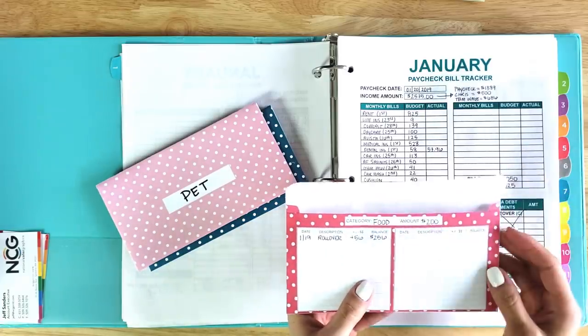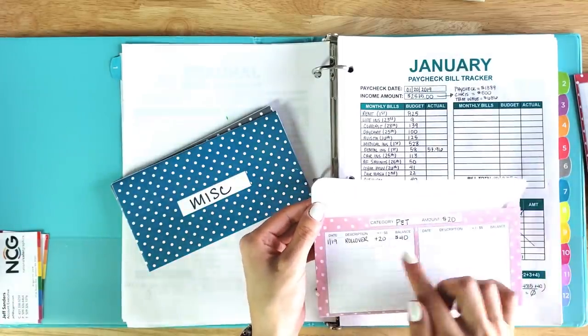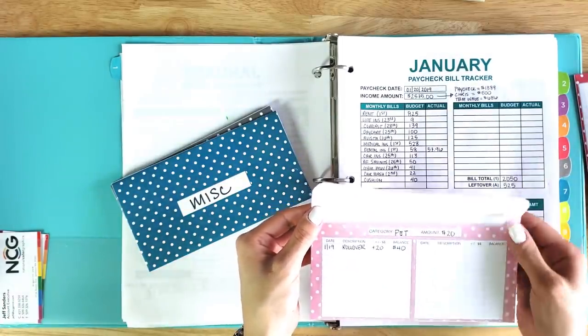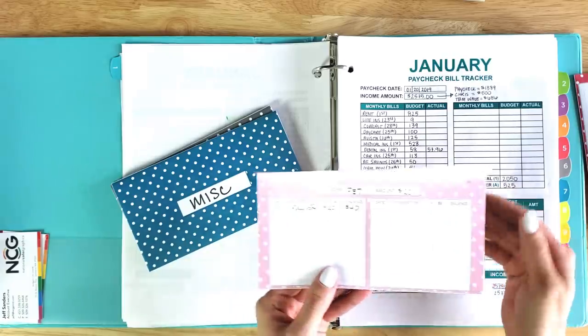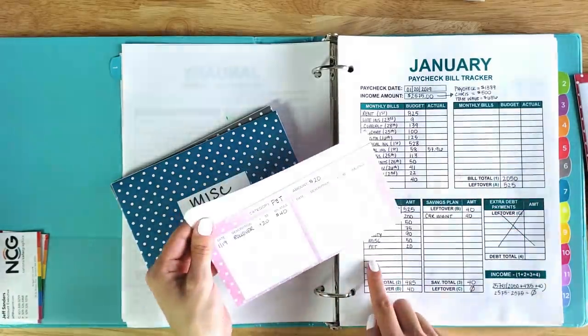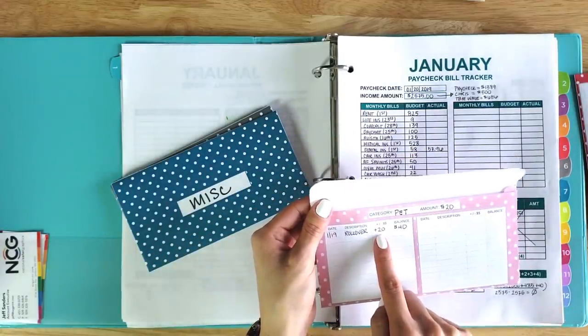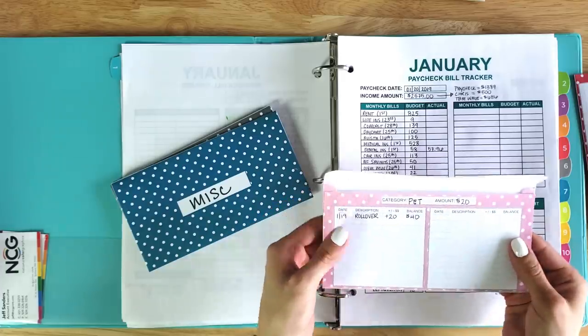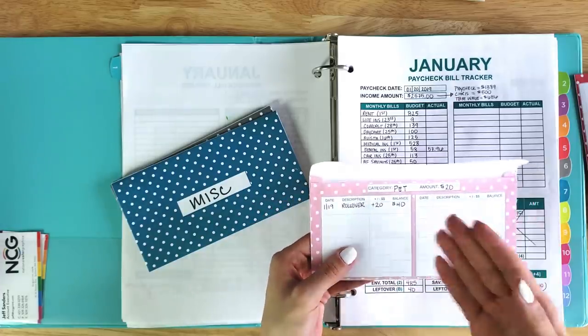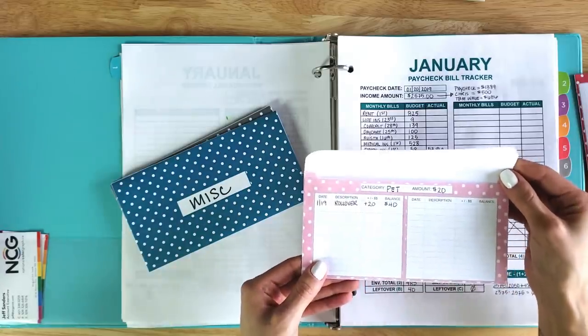For food, I now have $256. My pet envelope, I rolled over $20, which gives me $40. How this works is, I have a budget amount of $20. But, I have to include the rollover amount that I used for my last paycheck envelopes to give me this new balance. I like to keep an updated balance of what's inside my cash envelopes at all times.